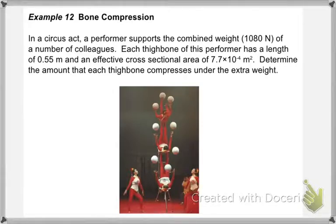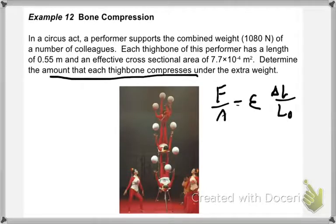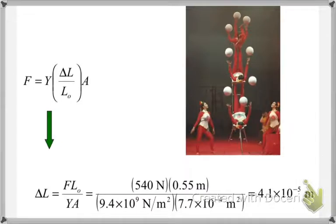How would you deal with that? We have our equation: F over A equals Young's modulus times delta L over the original length. We want to determine the amount that each thigh bone compresses under the extra weight, so that should be a value for delta L. Looking along, we get delta L equals force times the original length over Young's modulus times area.